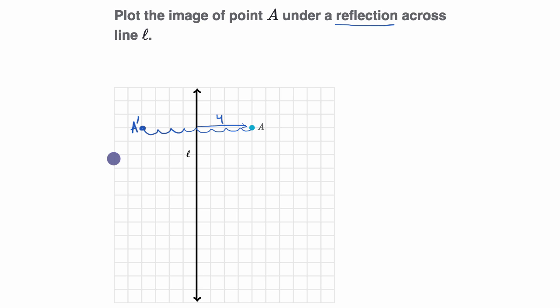We can maybe denote that as A prime. So if you're doing this on the Khan Academy exercise, you would actually just click on a point right over there, and it would show up. But this would be the reflection of point A across the line L.